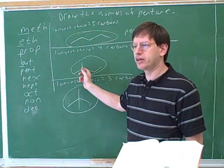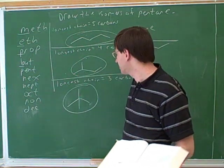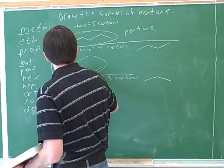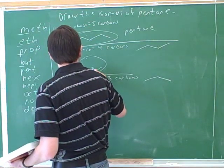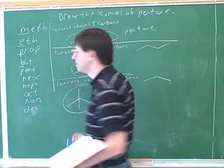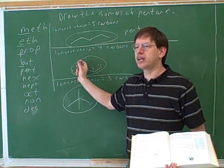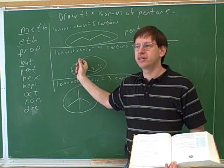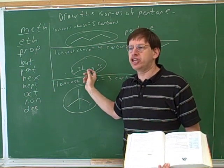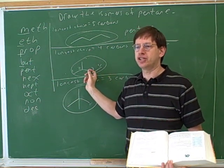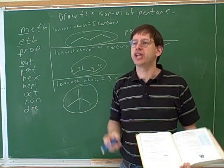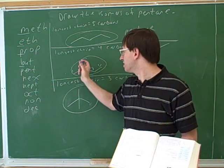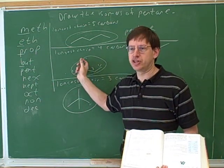So here we need to name the longest chain of carbons. I can number them: one, two, three, four. This group over here is what we now call a substituent, and this is what we would call the main chain, or the parent chain. The parent chain is the long chain, and anything else attached to it is called a substituent.